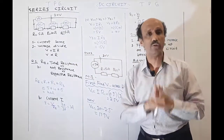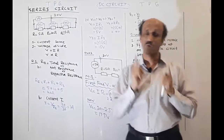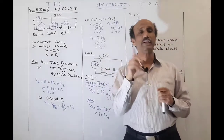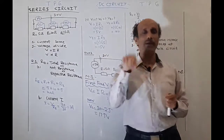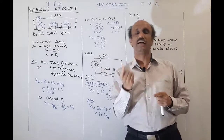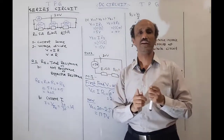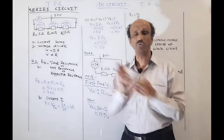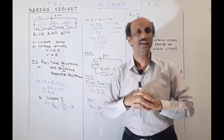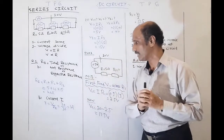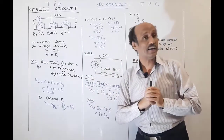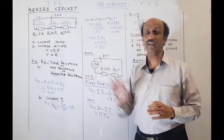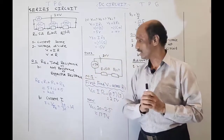To find the current, we apply the formula I = V / R_e. If you want to find the current in a series combination — from the battery, power supply, or source — first calculate the total resistance. Here, I = 30 / 30 = 1 ampere.